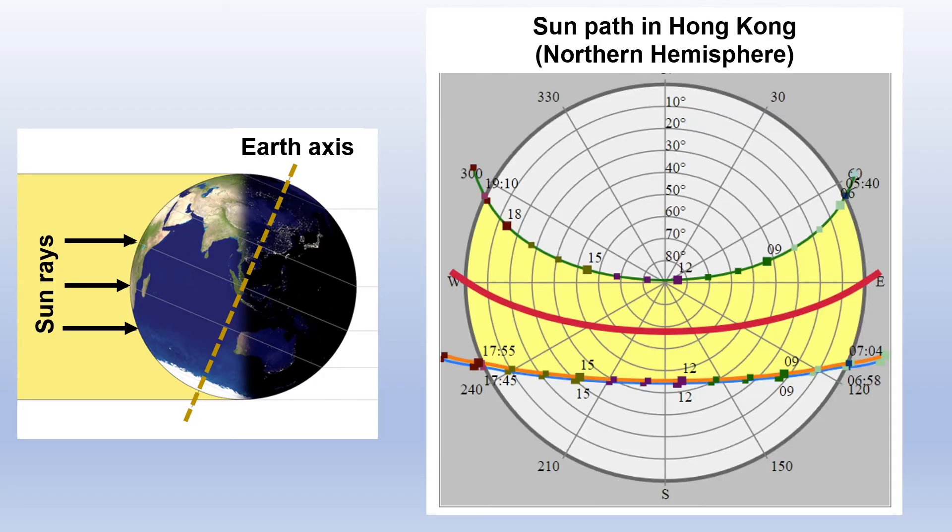For example, here is the sun path of Hong Kong in the northern hemisphere. We can see that the sun will start from the east side at sunrise and move towards the south during the day, and then move to the west at sunset.